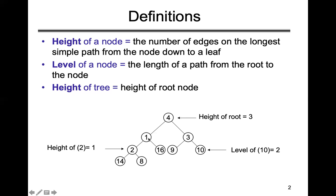To calculate height, we take the longest path. For a node with only one edge on each side, height equals one. The root is at level zero, the next level is the first level, then second level, then third level. So nodes at level 2 are at the second level only.